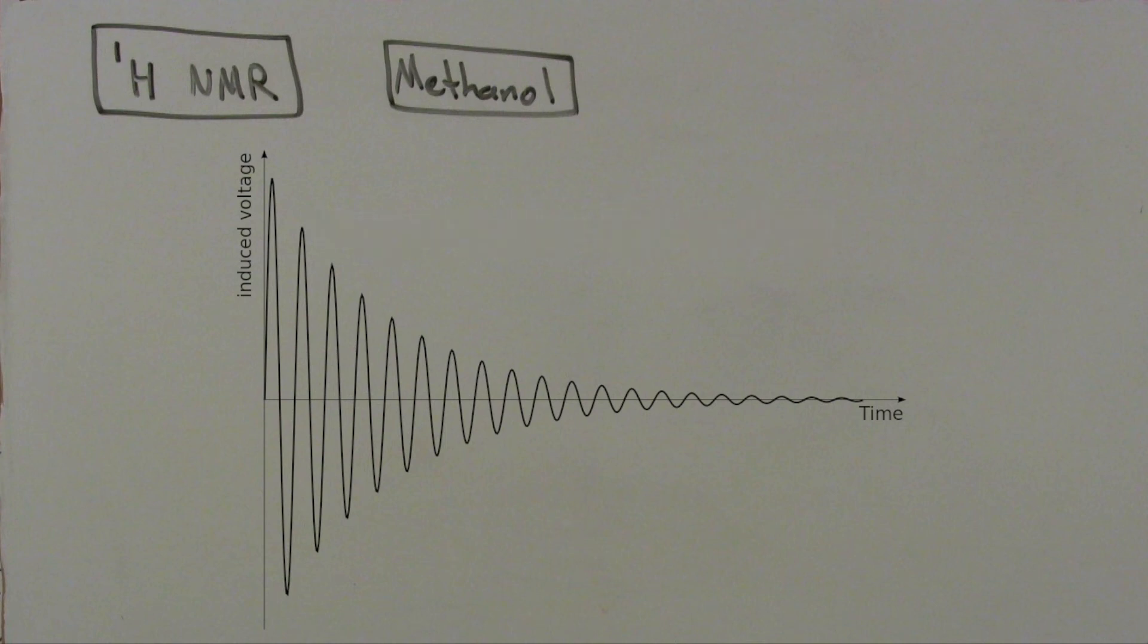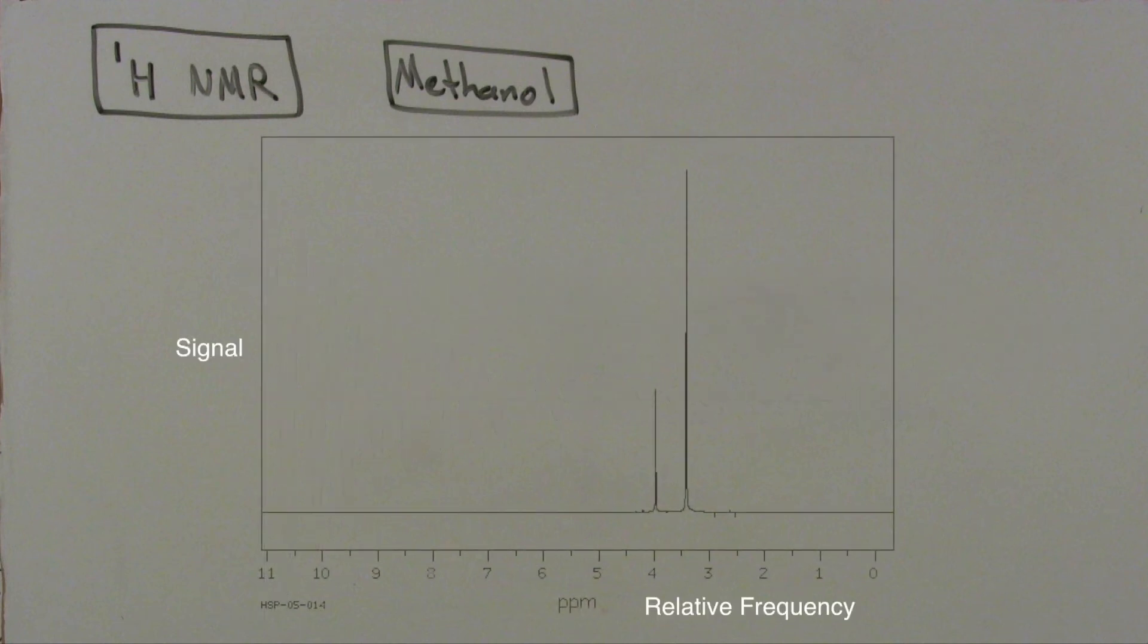A mathematical technique called the fast Fourier transformation transforms the signal over time graph to a signal over frequency graph. This frequency graph is the NMR spectrum, the output of the NMR spectrometer, and it displays the precessional frequencies of nuclei in a sample.